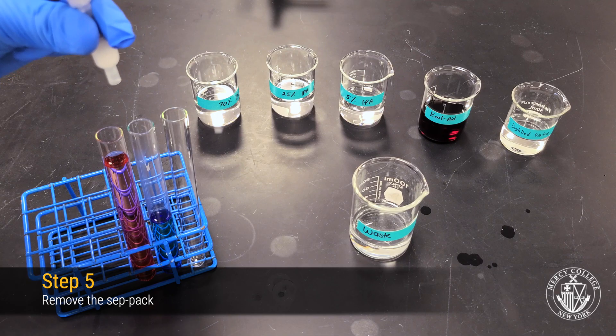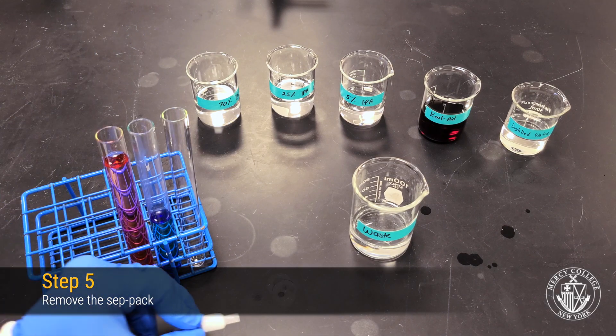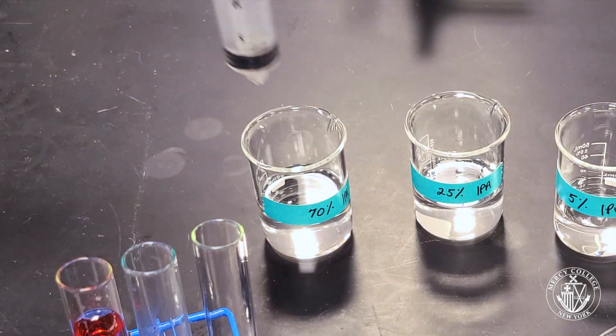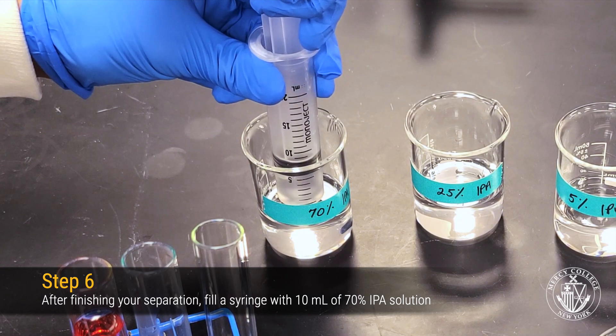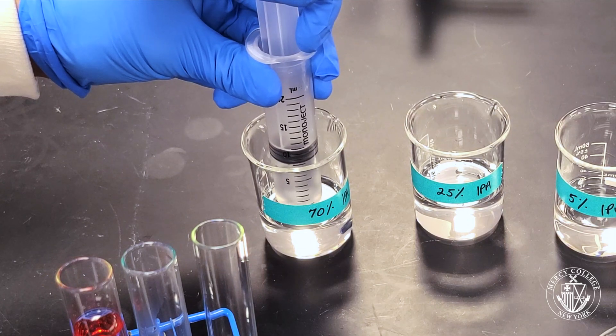After you've completed the separation, remove the CEPPAC cartridge from your syringe and refill your syringe with 10 mL of 70% isopropyl alcohol. This solution will be used for cleaning our column before storage.